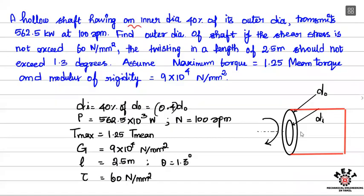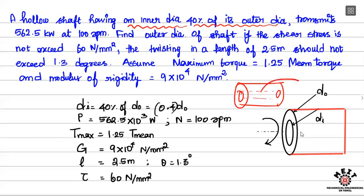The hollow shaft has an inner diameter that is 40% of its outer diameter. This is a hollow shaft — in the center it is a hole, having an inner diameter and outer diameter. If the outer diameter is 100 mm, then the inner diameter is 40% of that, which is 40 mm.